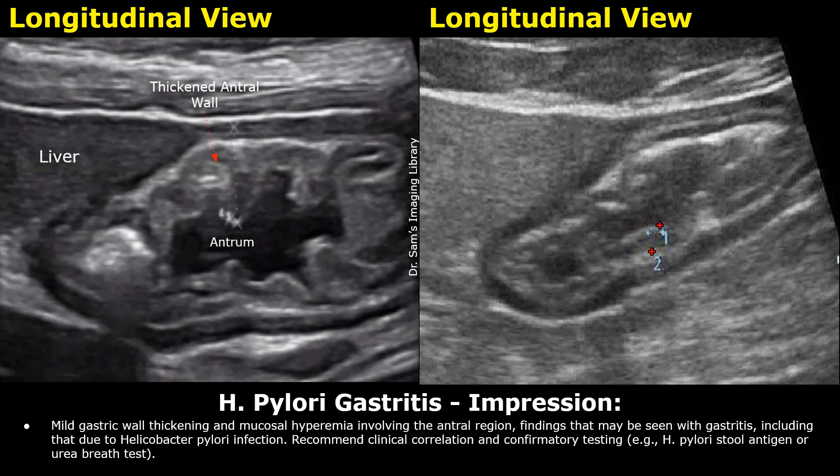Here is the impression: mild gastric wall thickening and mucosal hyperemia involving the antral region. Findings that may be seen with gastritis, including that due to Helicobacter pylori infection. Recommend clinical correlation and confirmatory testing such as H. pylori stool antigen or urea breath test.